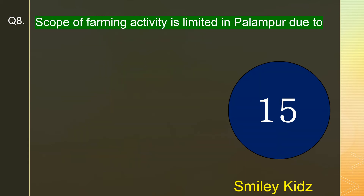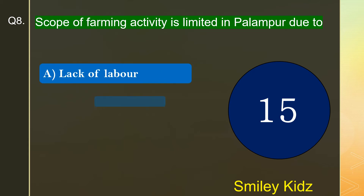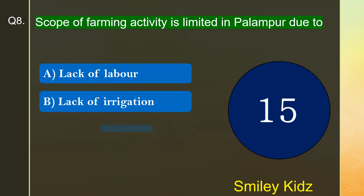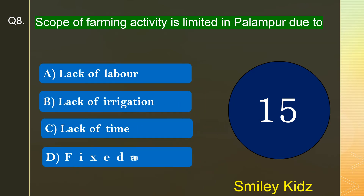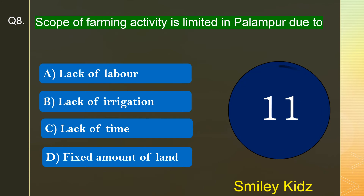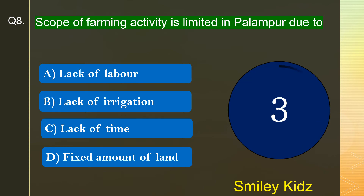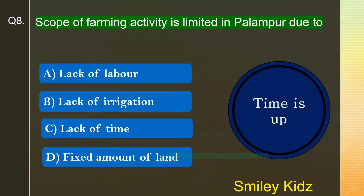Question number 8. Scope of farming activity is limited in Palampur due to. The options are A. Lack of labor, B. Lack of irrigation, C. Lack of time, or D. Fixed amount of land. Your time starts now. Your time is up and the right answer is option D. Fixed amount of land. Scope of farming activity is limited in Palampur due to fixed amount of land.